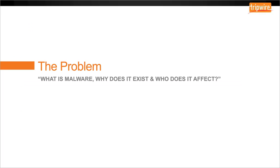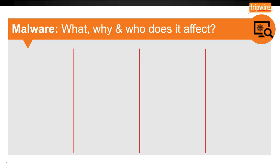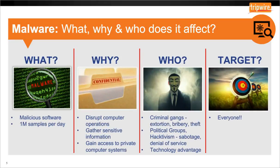Let's start with the problem. What is malware? Why does it exist? And who does it ultimately affect? As a lot of us know, malware, or malicious software, is any software used to disrupt computer operations, to gather sensitive information, or gain access to private computer systems. There are over 1 million new sample codes released every day, which explains why current systems, or at least methodologies, can't keep up. It has been said that by the year 2020, there will be over 50 billion devices being used worldwide, and security solutions alone will cost the UK, on average, up to 2 billion pounds.